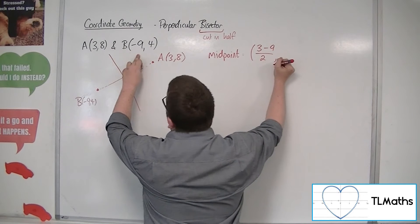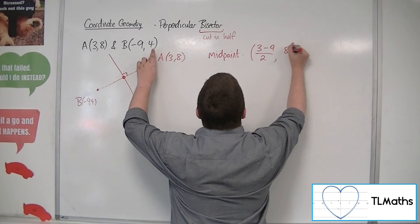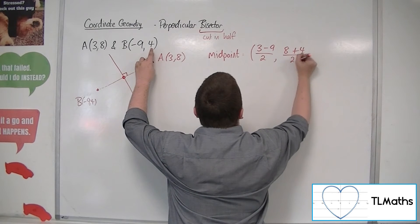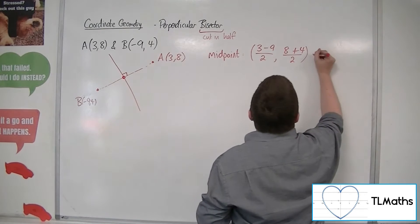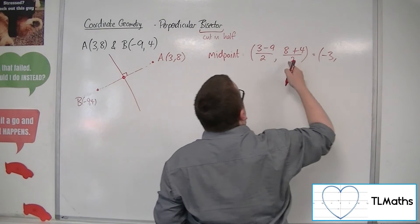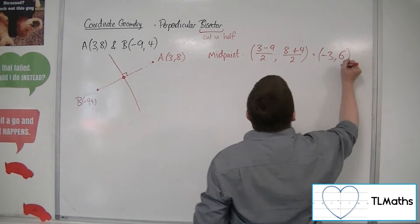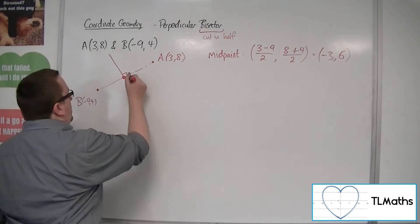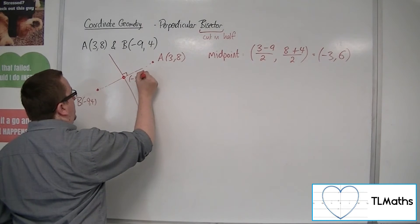So the average of those coordinates, and the average of the y-coordinates, 8 plus 4 over 2. So that would give us minus 6 over 2, so minus 3. 8 plus 4 is 12, 12 over 2 is 6. So minus 3, 6 is the midpoint.